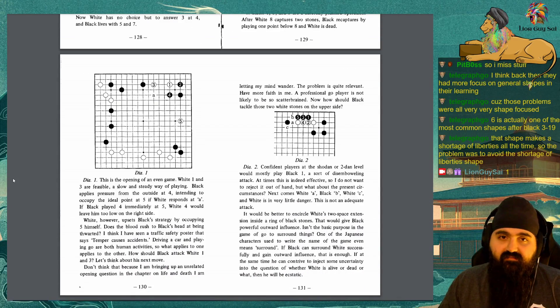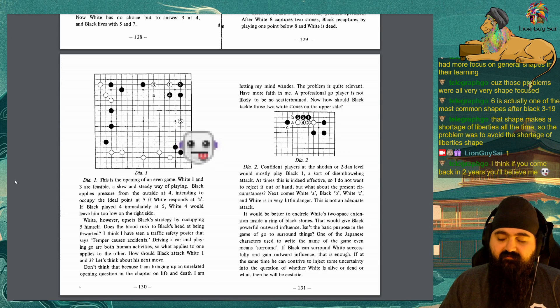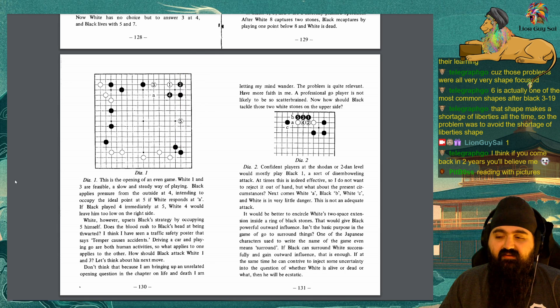Diagram 1: This is the opening of an even game. White 1 and 3 are feasible, a slow and steady way of playing. Black applies solid pressure from the outside at 4, intending to occupy the ideal point at 5 if White responds at A. If Black played 4 immediately at 5, White 4 would leave him too low on the right side. White, however, upsets Black's strategy by occupying 5 himself. Does the blood rush to Black's head at being thwarted? I think I've seen a traffic safety poster that says, Temper causes accidents. Driving a car and playing Go are both human activities, so what applies to one applies to the other. How should Black attack White 1 and 3? Let's think about his next move.